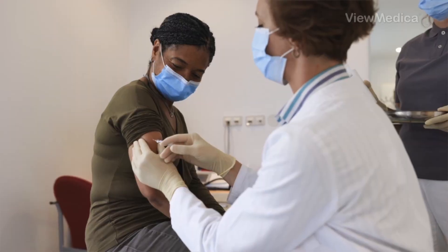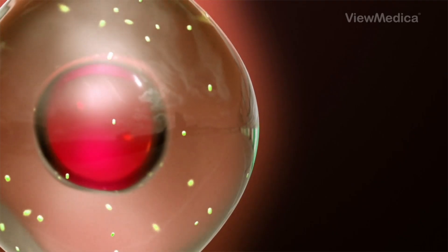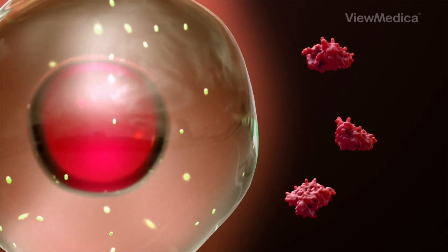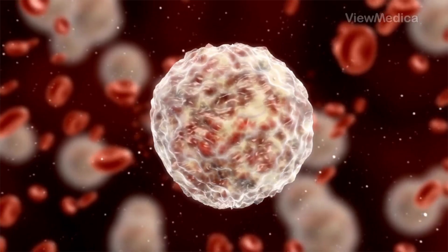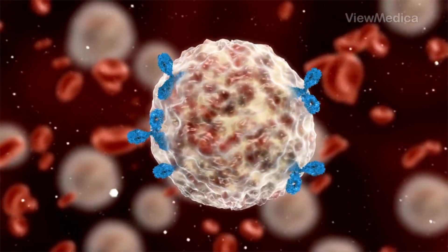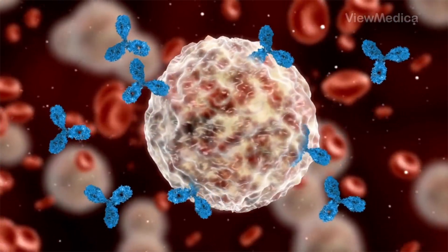When it's given to you, it tricks your cells into making a special protein that looks like part of the germ. Your immune system then reacts by making the antibodies you need to fight the germ.